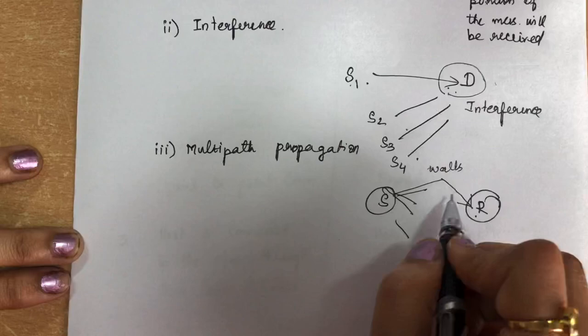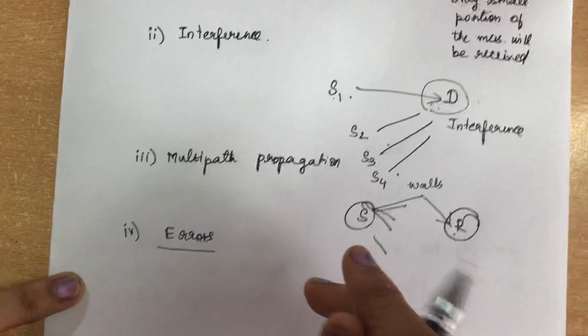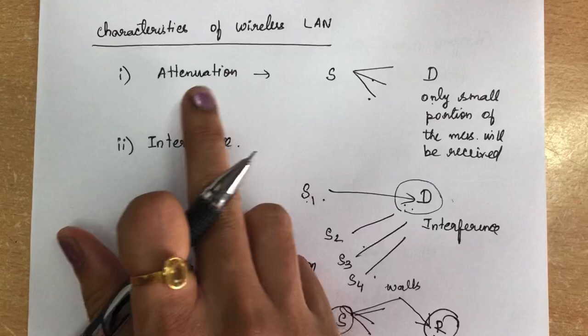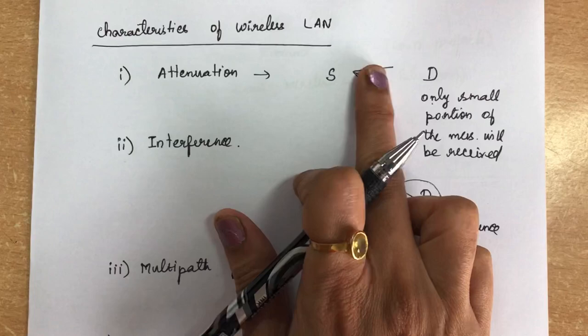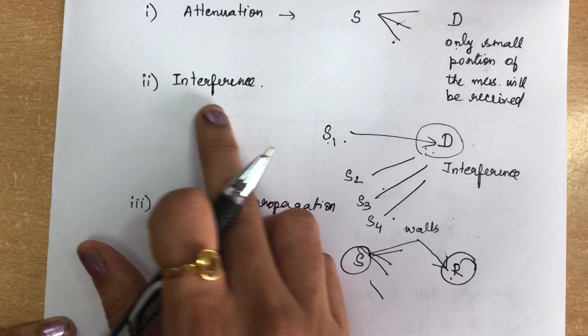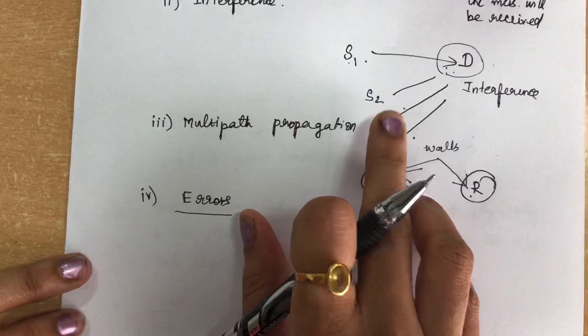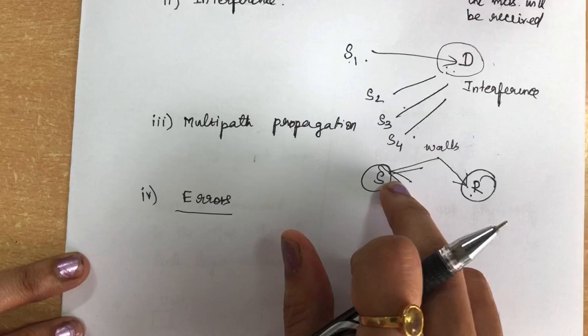Error detection becomes a more serious problem in wireless LAN because of all these broadcast-related issues. We must take errors seriously and implement error detection mechanisms in wireless LAN. To summarize: attenuation causes only a small portion of electromagnetic waves to reach the destination; interference occurs from other senders using the same frequency band; multipath propagation causes the same signal to arrive via multiple paths; and errors are the fourth concern.